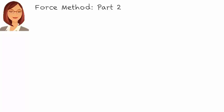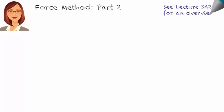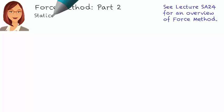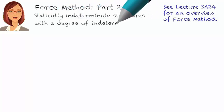This is a continuation of Lecture Essay 24, where we began discussing the use of the force method for analyzing statically indeterminate structures. Please watch that video for an overview of the method and how it can be used to analyze beams having a degree of indeterminacy of 1. In this lecture, we are going to focus on the use of the method for analyzing beams with a degree of indeterminacy of 2.